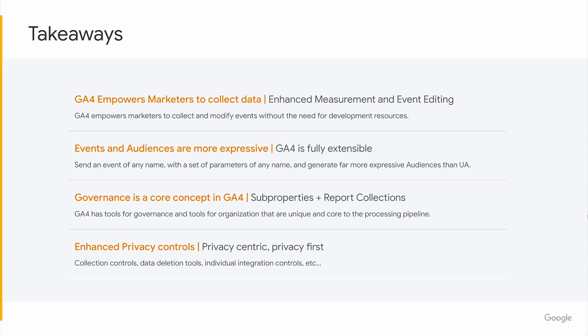We'll close with the key takeaways from this session. First, Google Analytics 4 empowers marketers to collect data directly from the UI — we've taken great leaps to reduce the amount of coding necessary. You can even create an event derived from another event, which then creates an audience, which then has an audience trigger. These things can build on top of each other and create very advanced collection models, so I advise you all to take a deep look at that. Second, events and audiences are more expressive. When thinking about GA4, we shouldn't think like we did with Universal Analytics — we can break away from the rigid event names and parameter sets like category, action, and label.